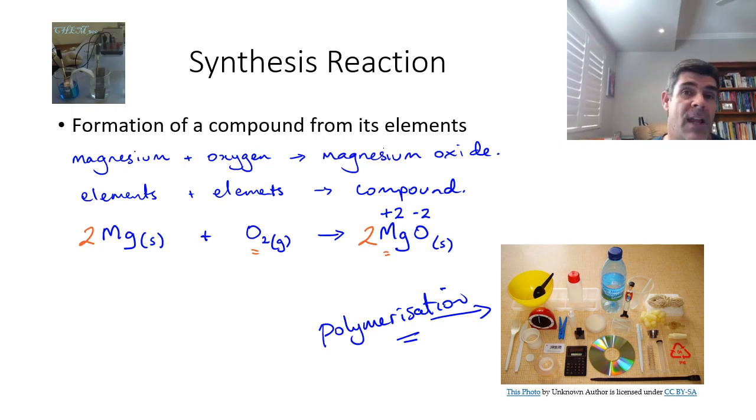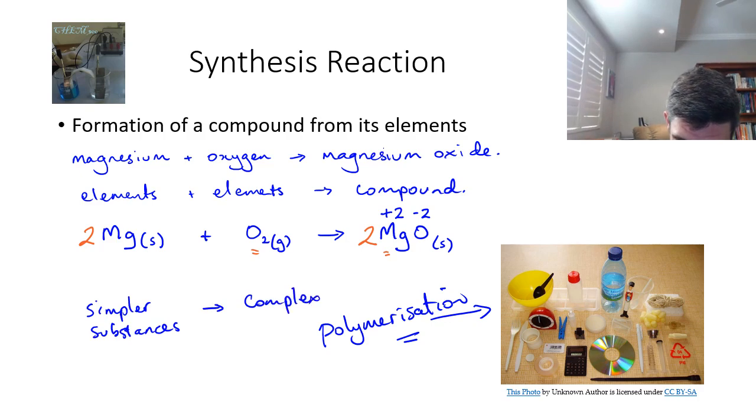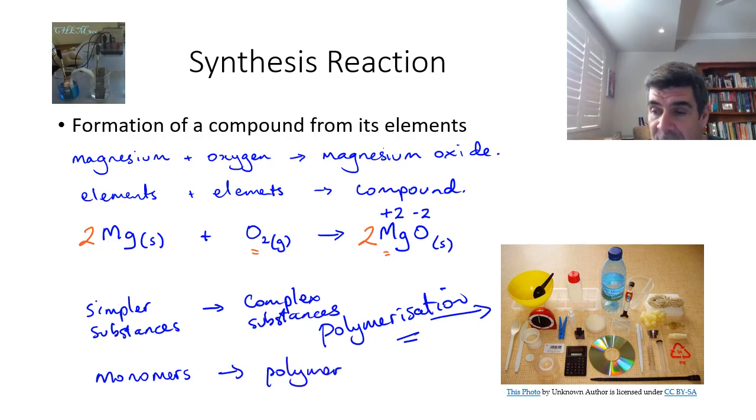Synthesis is one of the reactions that's also used to describe the production of complex substances from more simpler substances. So if I put simpler substances to complex substances, and as an example, put a series of monomers together to produce a polymer, such as what happens with some of these different types of plastics.